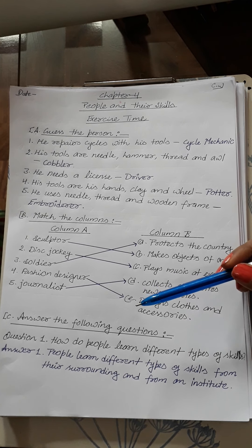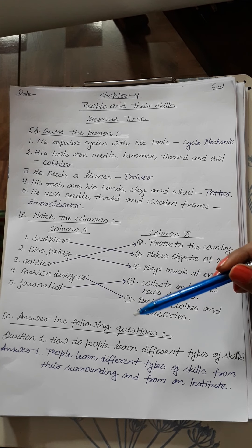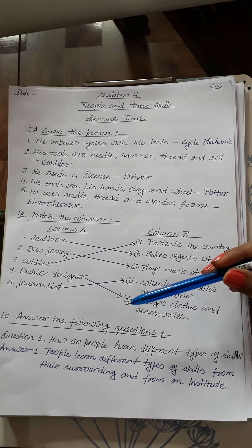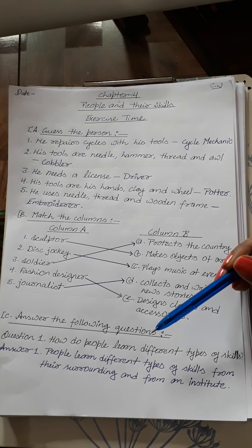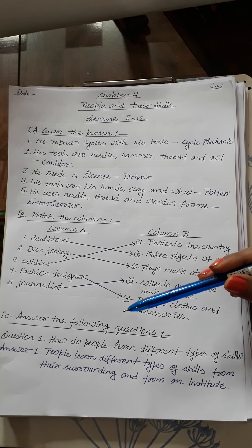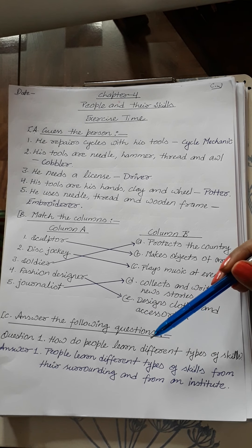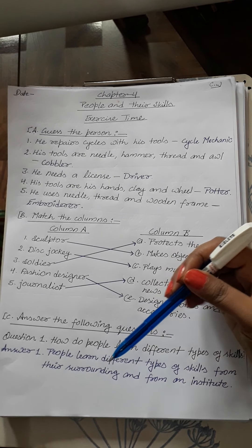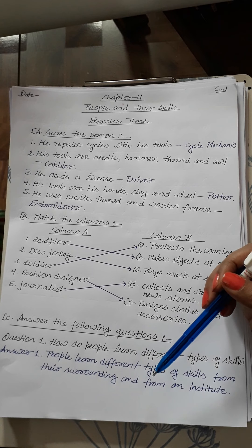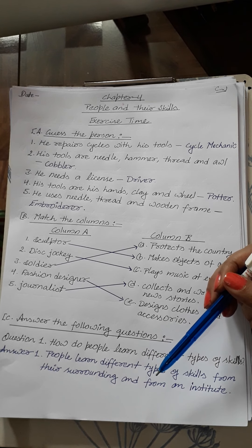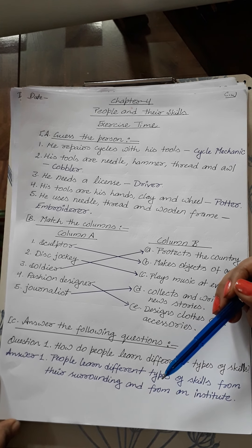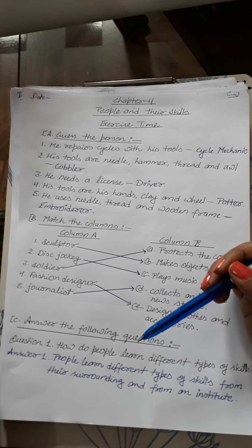Now Part C of the exercise: Answer the Following Questions. You have to do these question answers in your EBS copy. Question 1: How do people learn different types of skills? Answer: People learn different types of skills from their surroundings and from an institute.